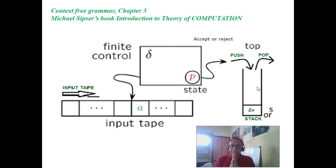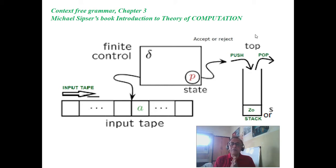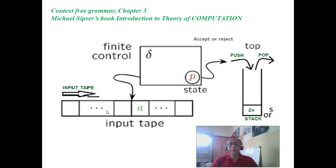The finite state machine should be in an accepted state, it should be at the end of the tape, and the stack should be empty. Then we say it is accepted. Otherwise, if the stack is not empty or it is not in an accepted state, then we say this pushdown automata is rejecting the sentence. One thing you must notice - the difference between FSM and Turing machine. In FSM, we do not have a stack.